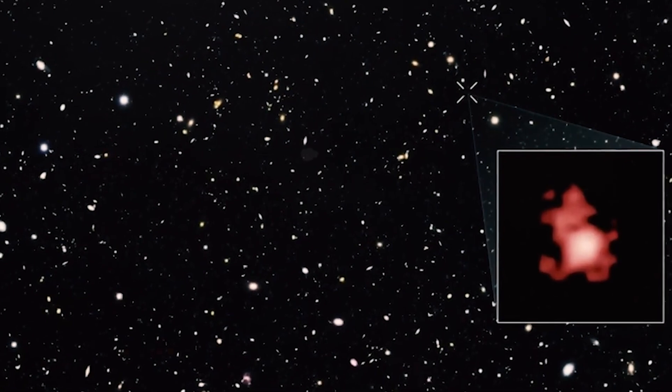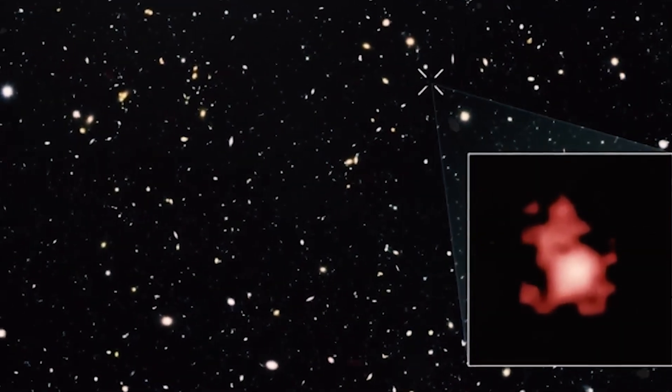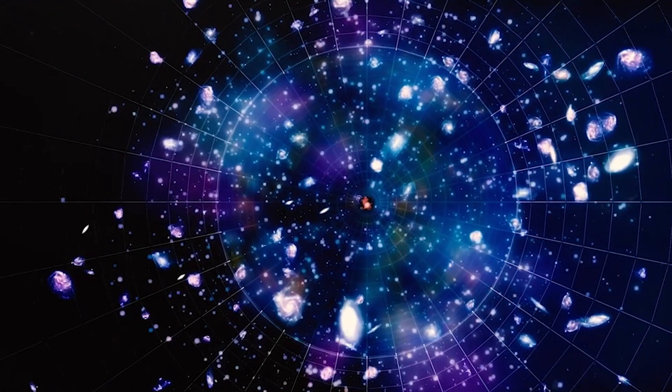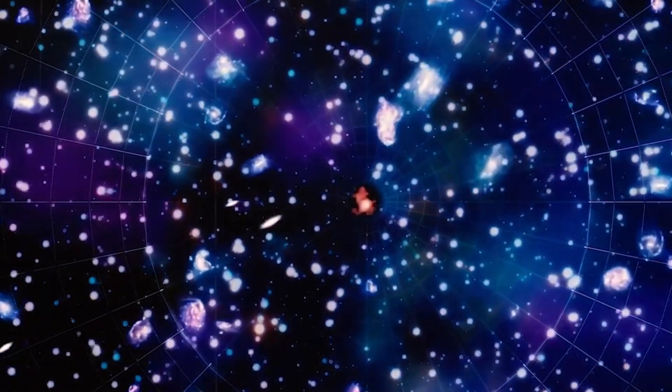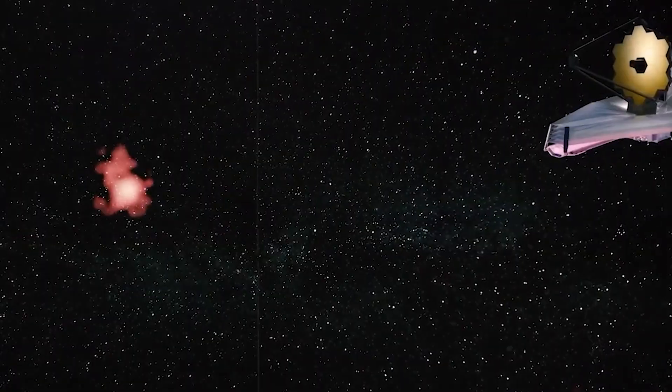The black hole and galaxy have a very high redshift of 11.1, which is the highest ever measured for any object in the universe. But how did James Webb manage to see such a distant and faint object?